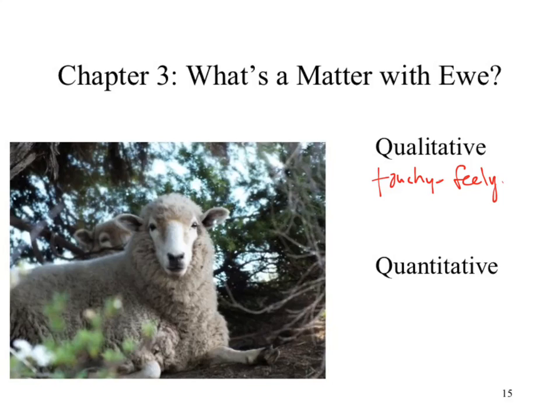We could also shift to the fact that there are two sheep. There's one's head in the back and the one in front. The observation that there are two sheep - is that a touchy-feely observation? No, that's actually applying a number to it. We're quantifying what's being observed. That gets us our quantitative observations.